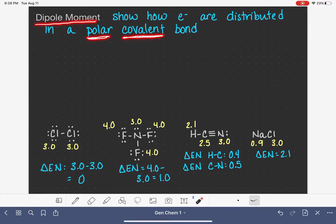The dipole moment is going to show us which of the two atoms has a stronger attraction for those electrons and how the electrons are actually balanced or distributed between the two atoms.